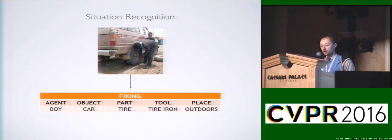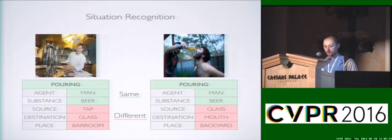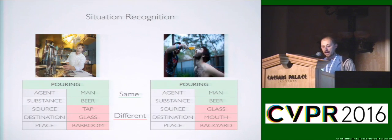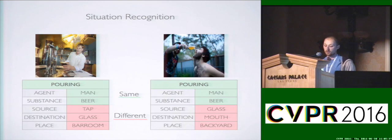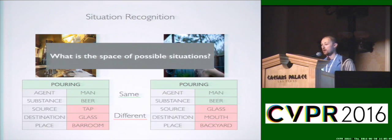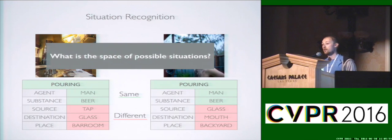We also classify those objects into how they're participating within the activity — so the part being fixed is the tire, and the tool being used is the tire iron. If we could do this, we could make exactly the types of distinctions Turkers were making. For example, pouring is happening in both cases, but the tap is where the beer is coming from in one case versus a glass in the other. One fundamental challenge is: where do these roles come from? What is the space of possible situations?